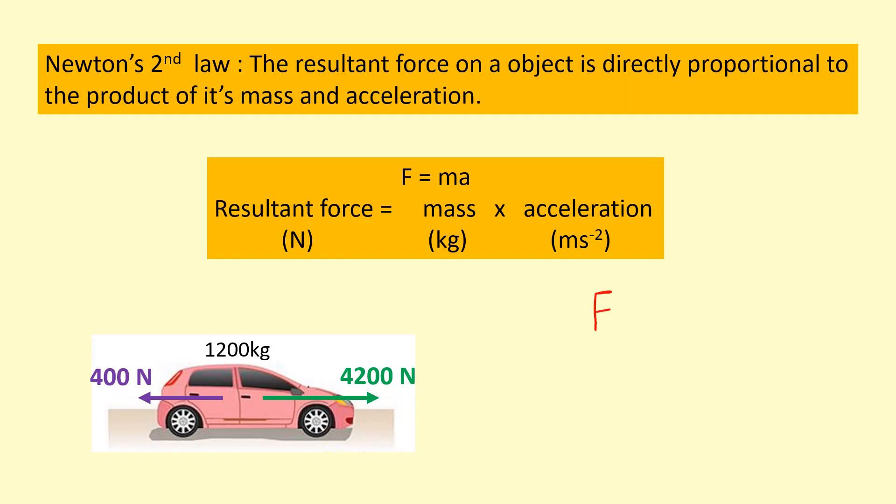So if I write F equals ma, instead of F I'm going to write the resultant force which I know is going to be 4200 minus 400 equals the mass which is given, 1200, times acceleration which I don't know. So the result was 3800, I'm going to divide that by 1200 mass to give me the acceleration which is 3.2 meters per second squared.